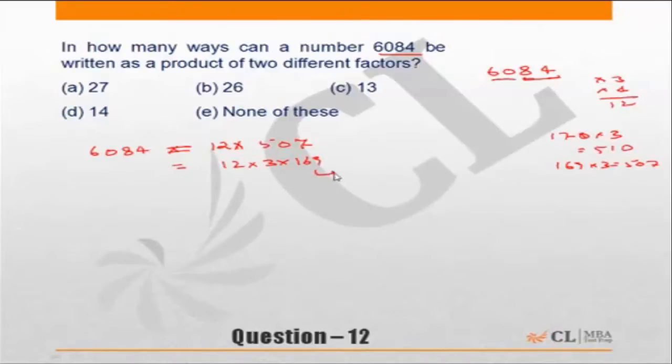169 is 13 squared and 12 is nothing but 2 squared into 3. So the number can be written as 2 squared into 3 squared into 13 squared.